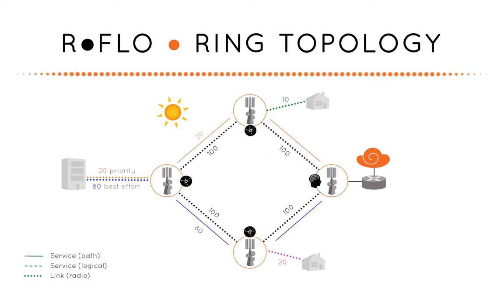The physical paths the services take over the 100 megabits per second radio backhaul links are calculated by the mind to provide optimal service quality — no path configuration is required by the WISP. The mind ensures the high priority 20 megabits per second business service follows a path with the least utilization. The paths the service takes are shown in mind control on a map interface.